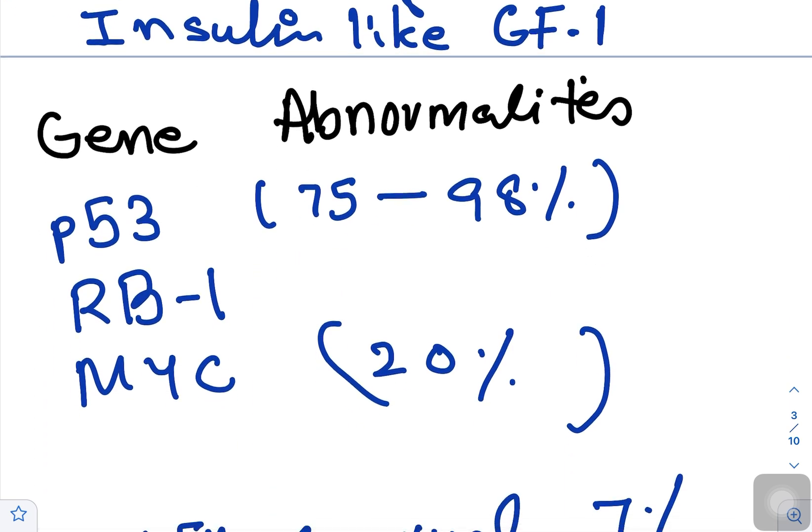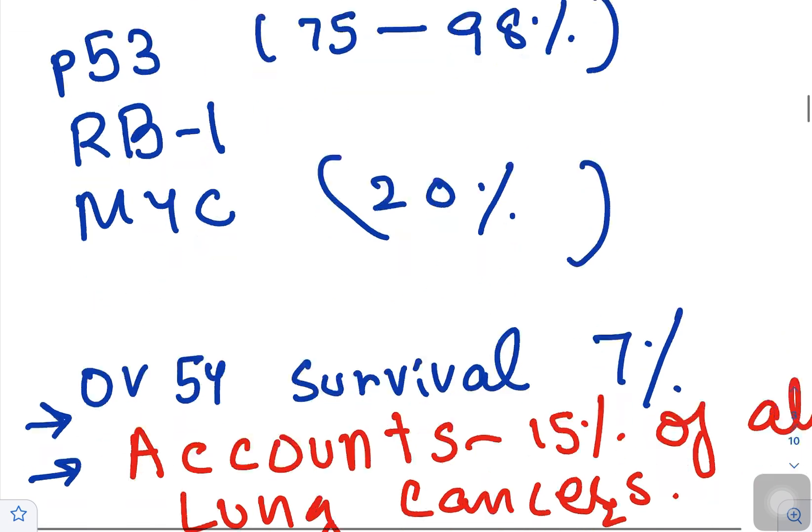Gene abnormalities in small cell cancer: p53 in 75 to 98 percent, retinoblastoma gene 1, MYC in 20 percent.